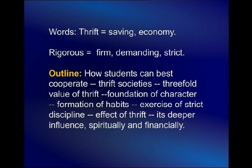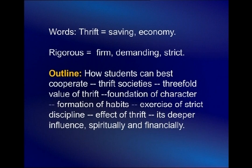The outline for this passage — a sentence outline — could be: how students can best cooperate through thrift societies; the threefold value of thrift: foundation of character, formation of habits, exercise of strict discipline; and the result or effect of thrift — its deeper influence spiritually and financially. If you string those phrases together keeping in mind the sentence connectors, you can form a very coherent paraphrase.